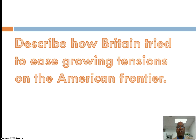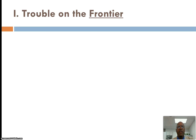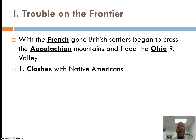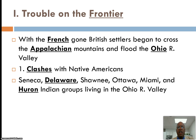Let's look at how Great Britain tried to ease tensions on the American frontier. Remember, there's trouble on the frontier. After the French and Indian War, many settlers started to move past the Appalachian Mountains into the Ohio River Valley. Clashes with Native Americans began to occur. Some of these groups were the Seneca in Delaware, the Ottawa, the Miami, and the Huron — we were familiar with them.